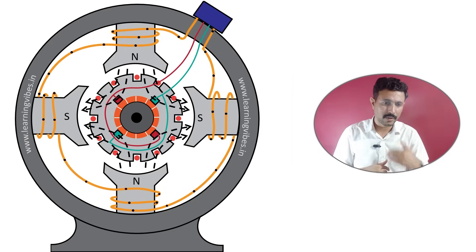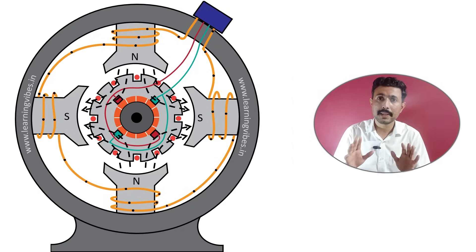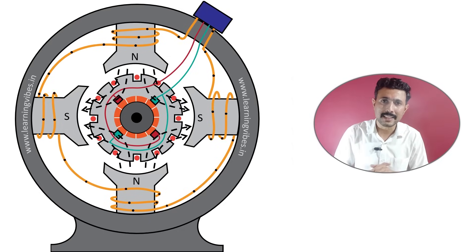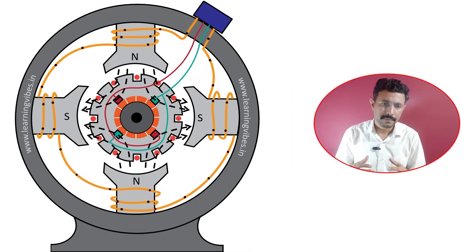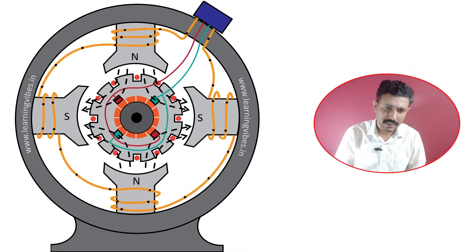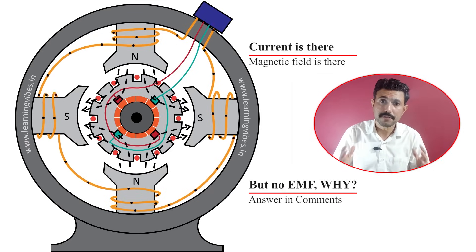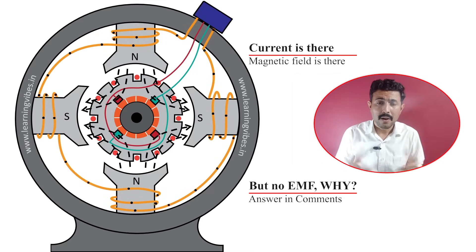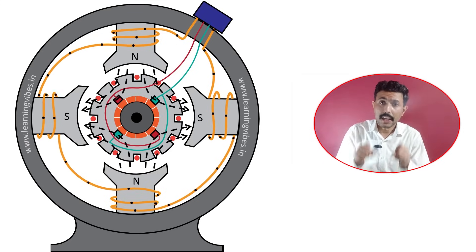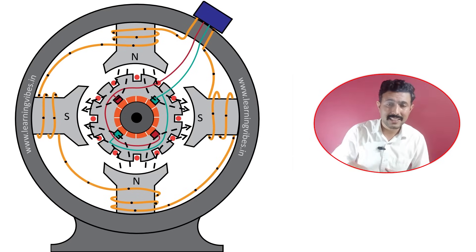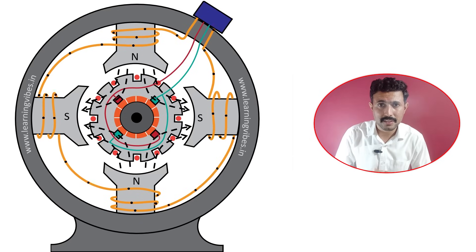N pole, S pole, N pole, S pole — there is a rotor, which we will call the armature. Now, current is flowing through the field, magnetic field is produced, but still there is no EMF induced into the armature. Why is it like this? If any of you knows the answer, write it in the comment section below.